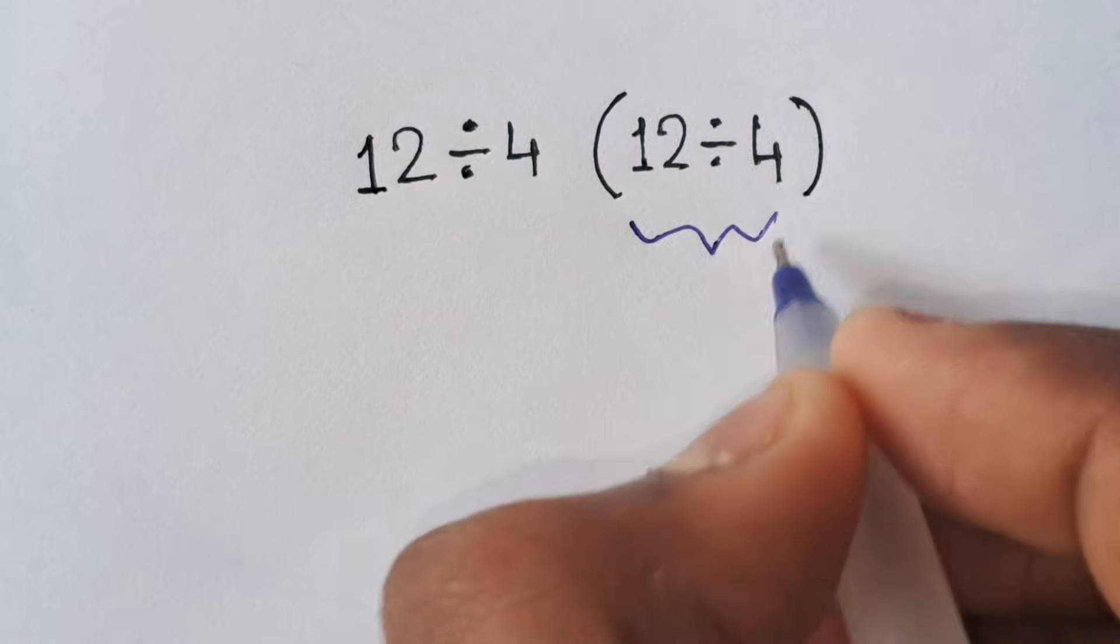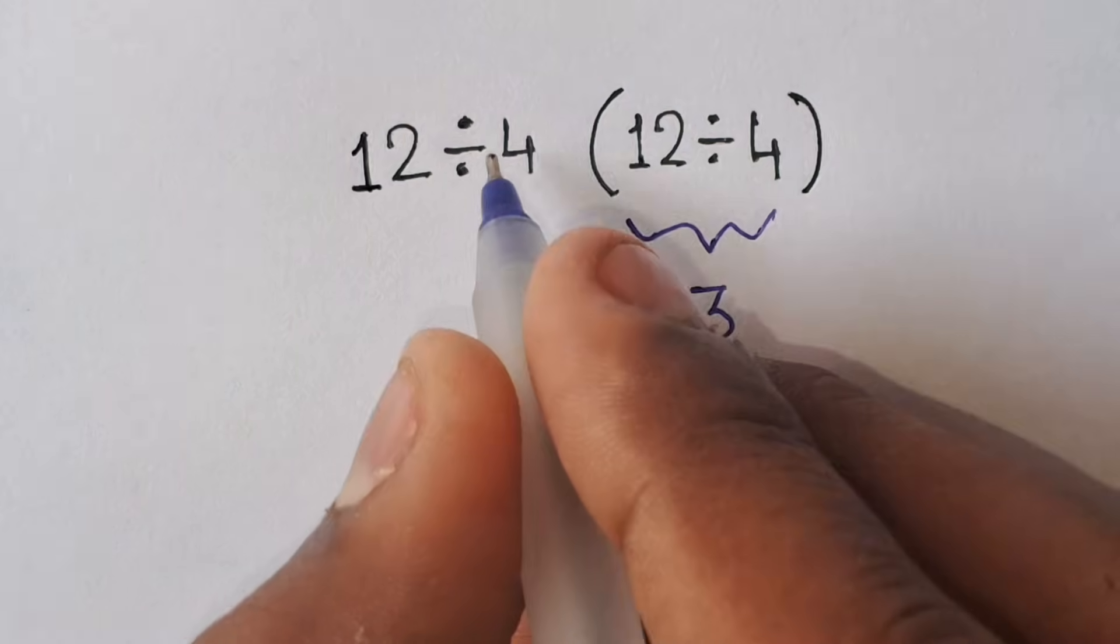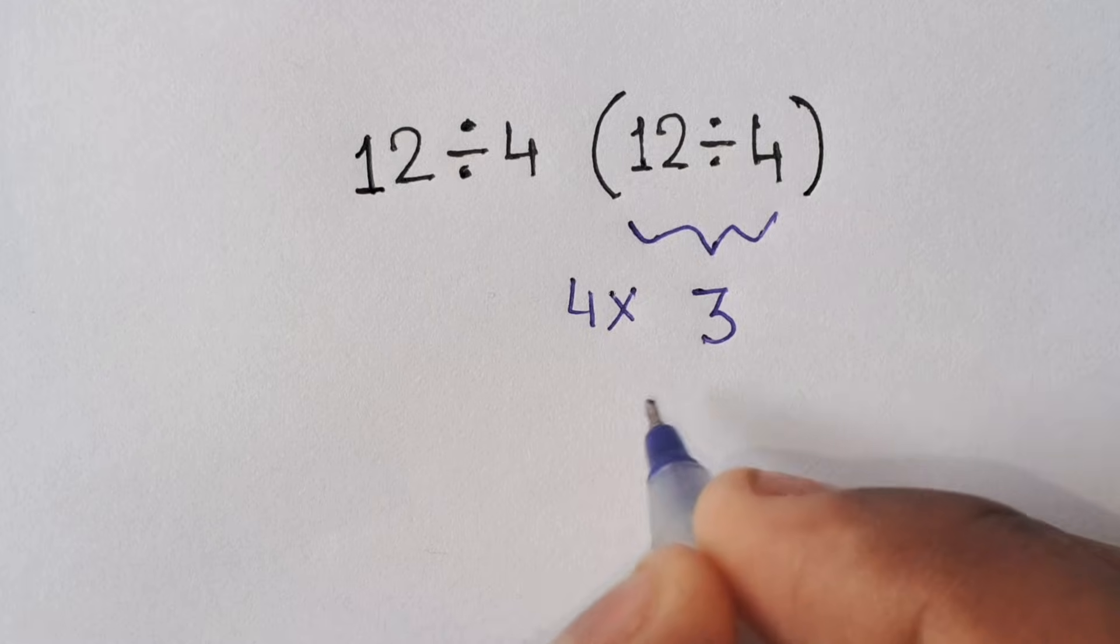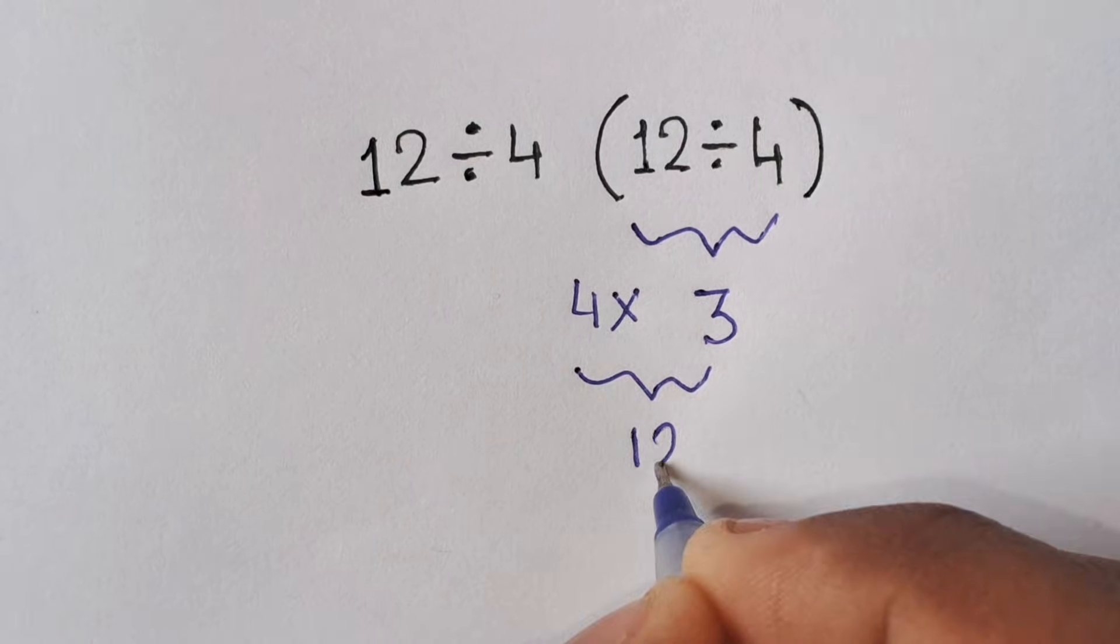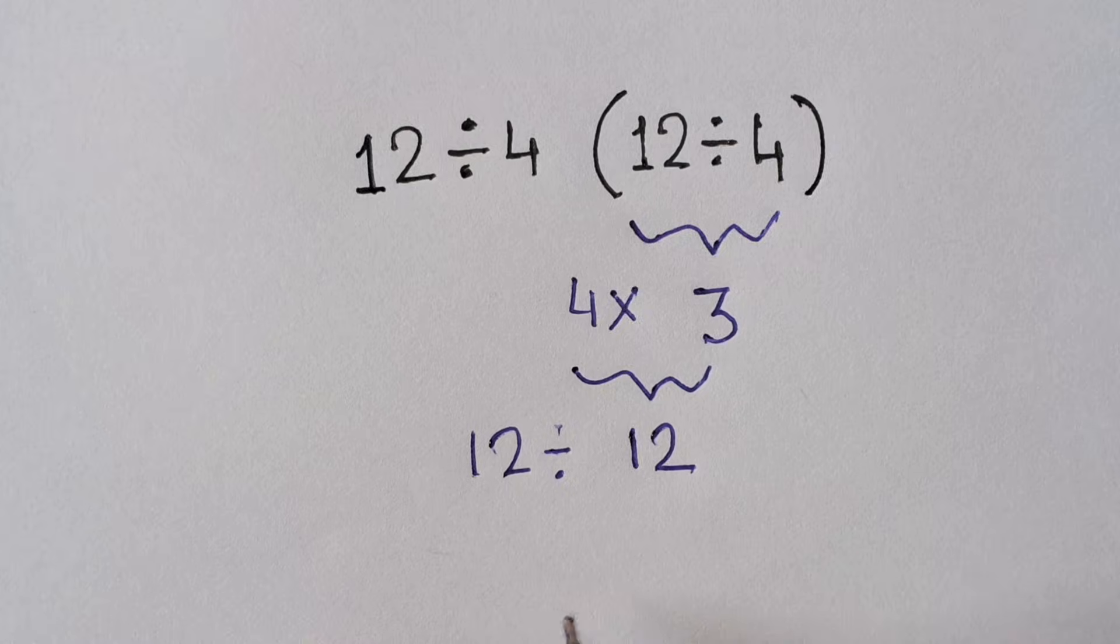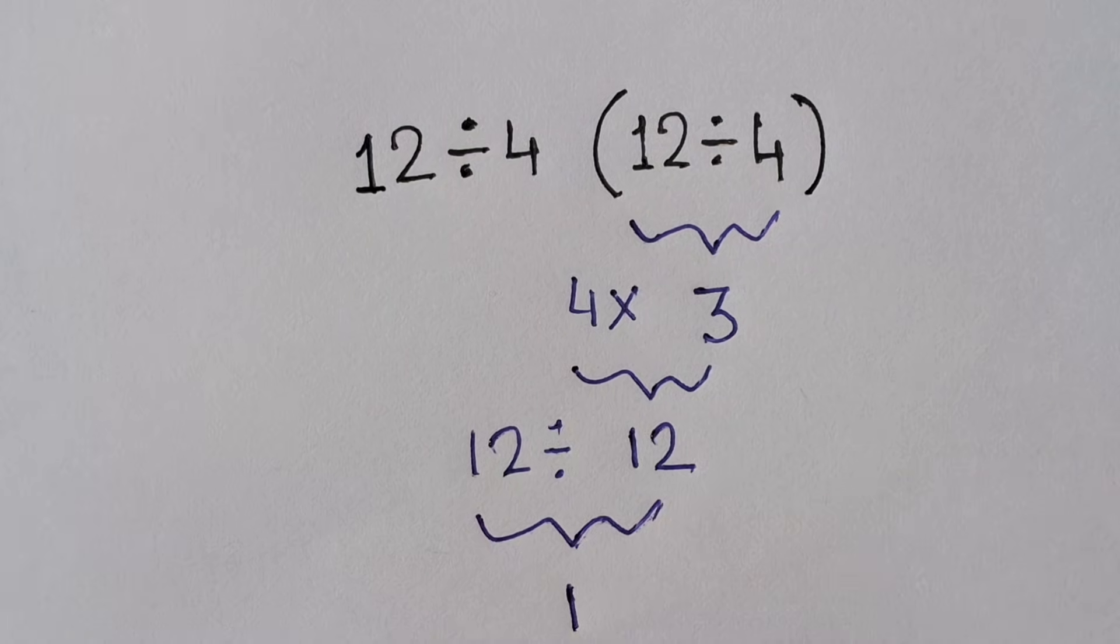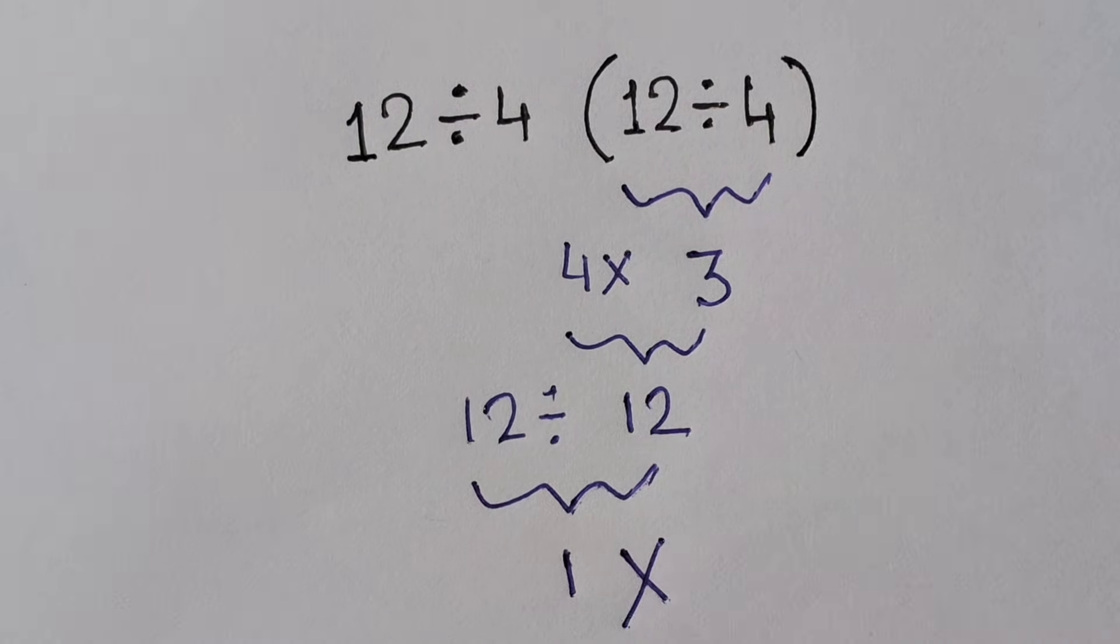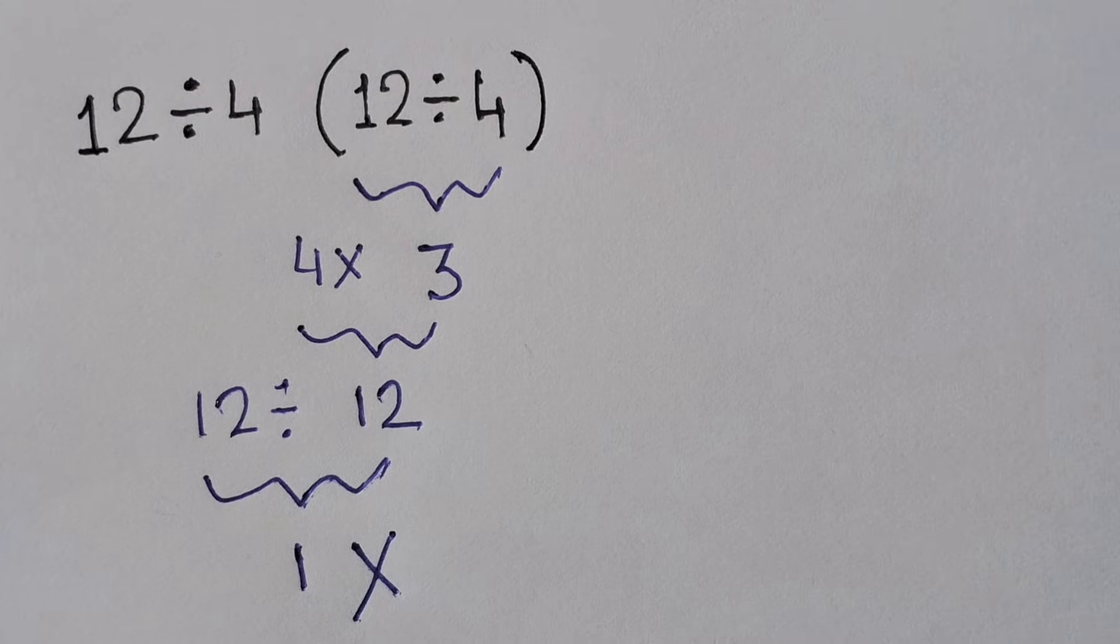12 divided by 4 is equal to 3. Here we have 4 times 3 which is equal to 12, so finally 12 divided by 12 is equal to 1. But 1 is not the correct answer for the expression